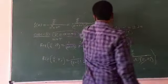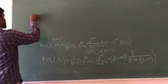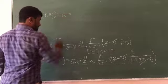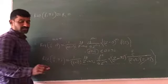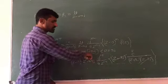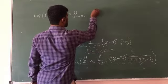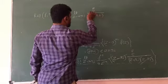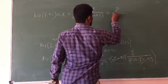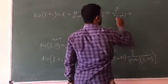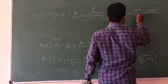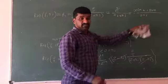Since 1 minus 1 is 0 and 0 factorial is 1, we only need the limit. The limit as z tends to i pi of e raised to z divided by (z plus i pi) gives e raised to i pi divided by (i pi plus i pi), which equals e raised to i pi divided by 2 i pi.